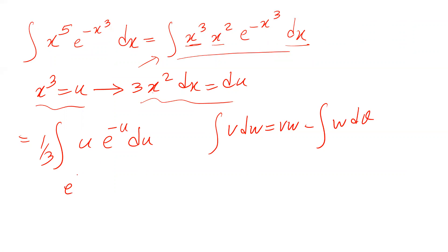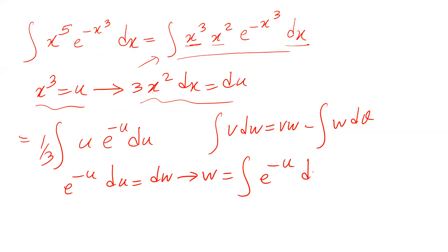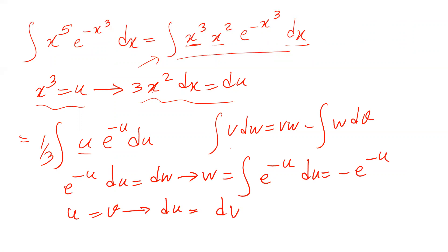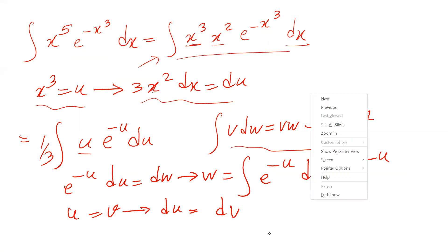The integration by parts formula is: integral of v dw equals v·w minus integral of w dv. Here, if we define e with the power of minus u du as dw, then w equals the integral of e with the power of minus u du, which equals minus e with the power of minus u. And we define u as v, therefore du equals dv.